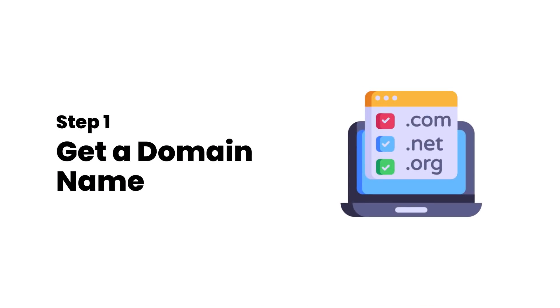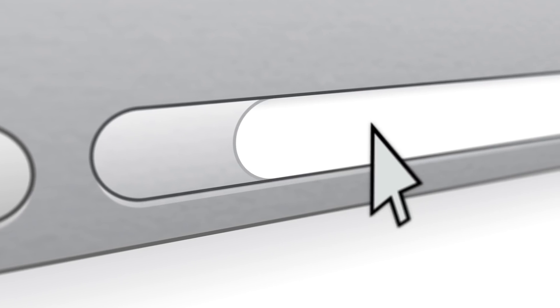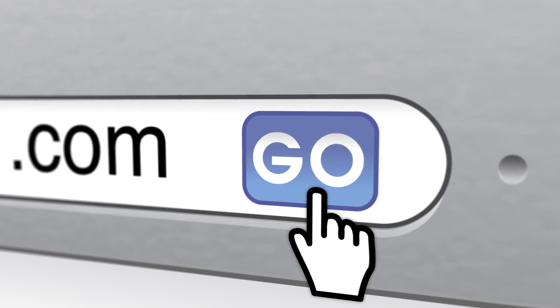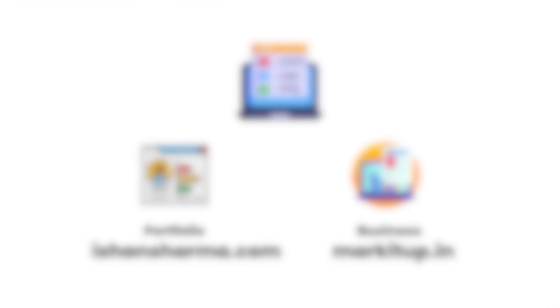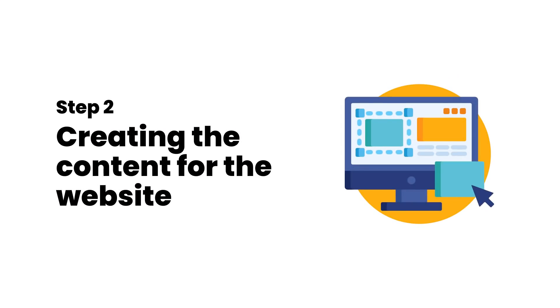First of all, you need a domain name for your website — for example, ishansharma.com, or youtube.com. Similarly, you'll require a domain name for your particular website. For some of you that might be a portfolio website, so you can choose your own name. For some it might be your business, for example marketup.in. You'll have to find a unique domain name that no one else has bought.